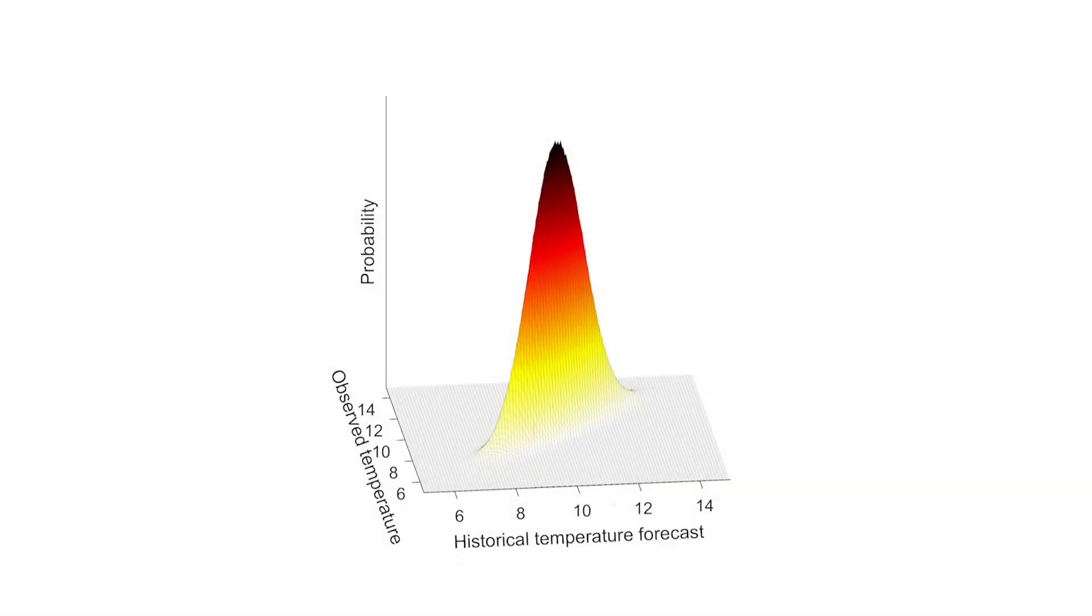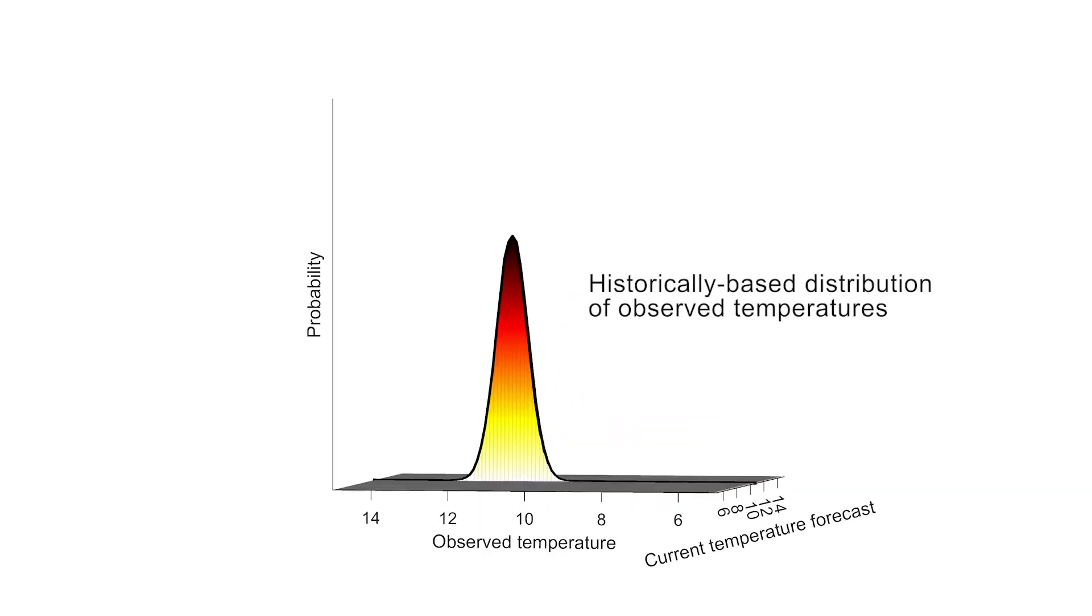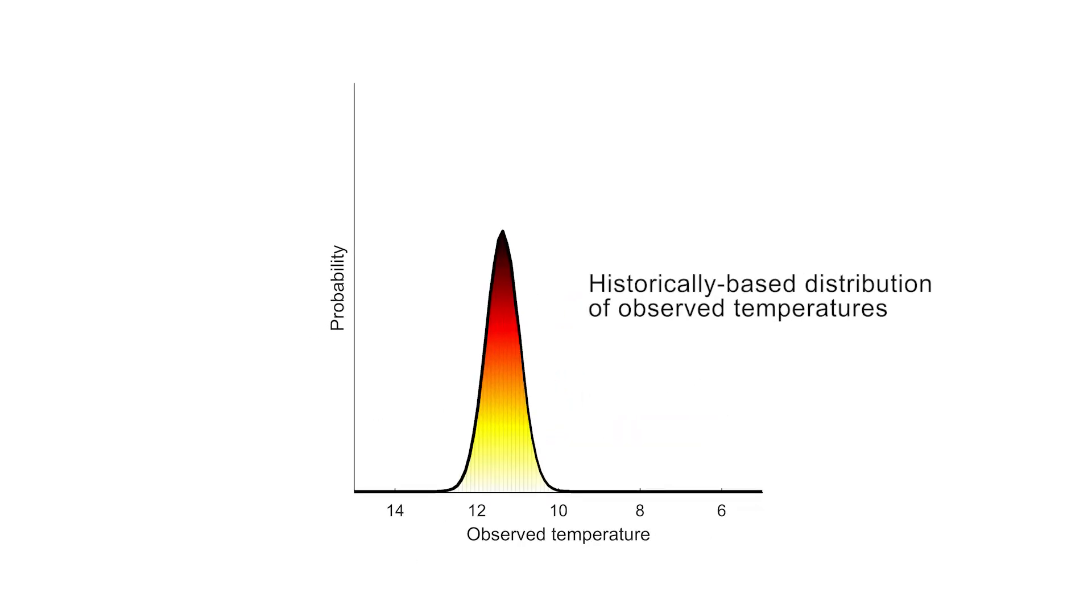If we create a slice through the surface at the current forecast temperature, we obtain a historically based distribution of observed temperatures. This represents the uncertainty associated with the forecast value of 11 degrees Celsius. Because this probability distribution is based on historical observations, we've now removed any bias from the current forecast.